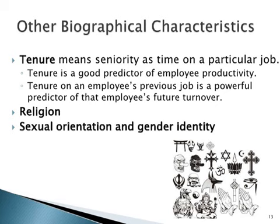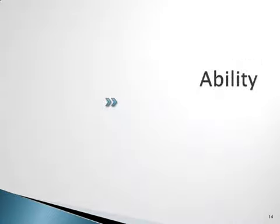The final biographical characteristic is sexual orientation and gender identity. Employees differ widely in their treatment based on sexual orientation, just as we discussed regarding gender — whether the employee is male or female. We have now discussed all the types of biographical characteristics and will complete the second part of this chapter in the next lecture, which will begin with the definition of ability and its two types: intellectual ability and physical ability. Good luck, students.